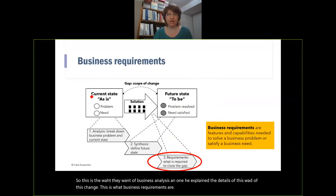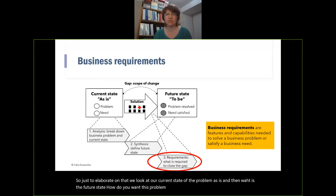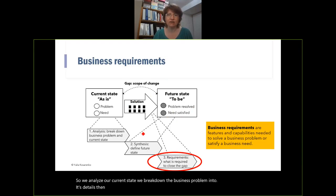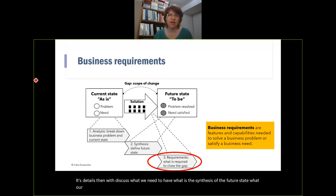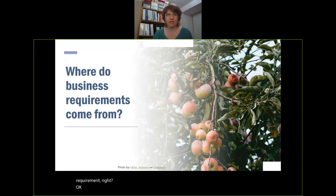We look at our current state — the as-is — and then what is the future state, how do we want this problem resolved or our business needs satisfied. We analyze our current state, break down the business problem into its details, then discuss what we need to have — the synthesis of that future state, what our future state needs to be like, how to get there. This really becomes our business requirements.